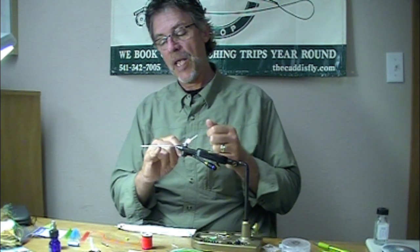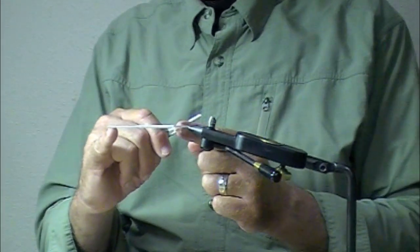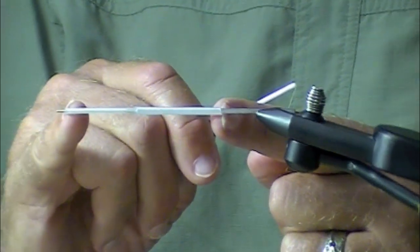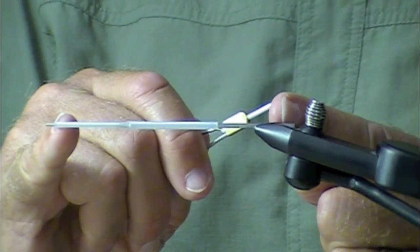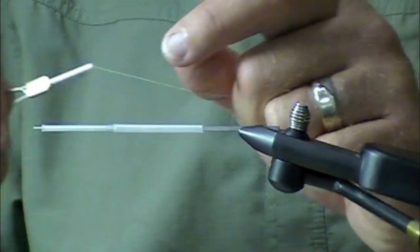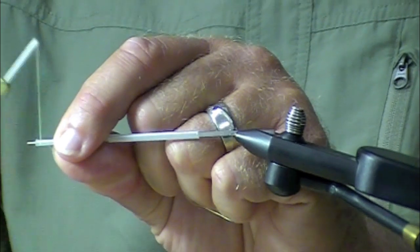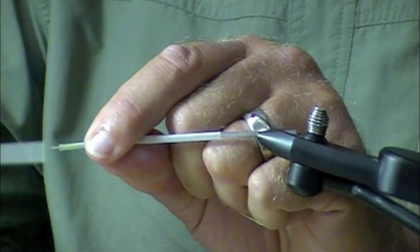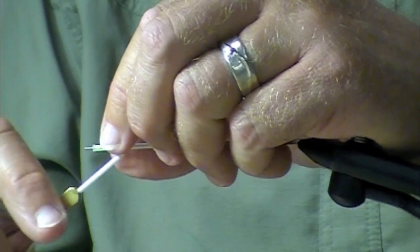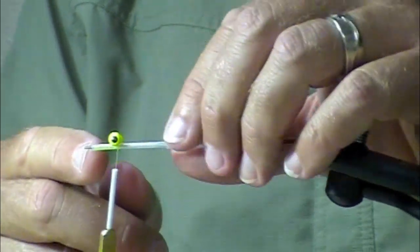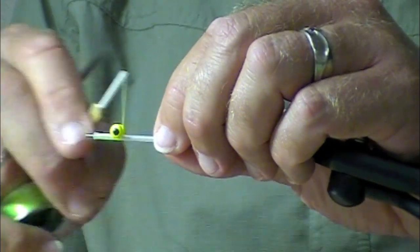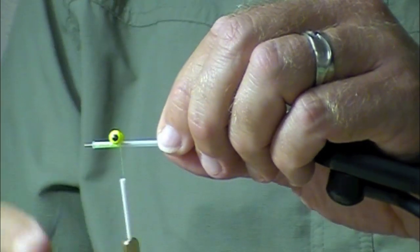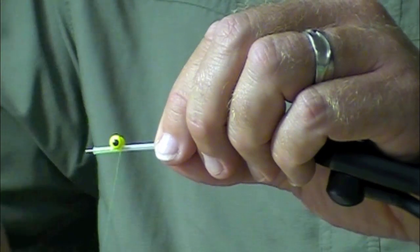We're using a pro flexi tube because I want this hook to ride back here. This is going to be a fairly long fly. I've already flared this end, melted it, and poked it to keep it open. I'll leave a fair amount of space. I always like to finish my tube before - when you say finish, you mean melt and flare the end. That just keeps the thread from coming off the end.